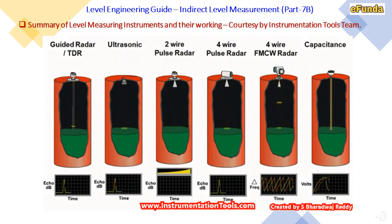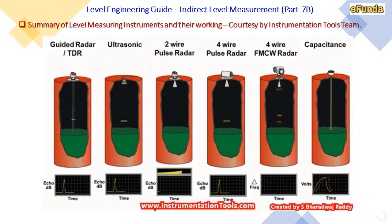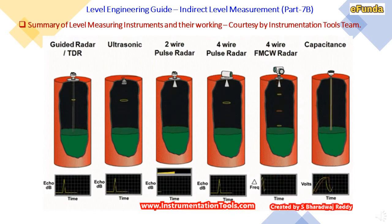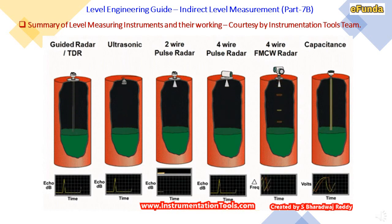The device types shown in the summary animations include: guided wave radar type, ultrasonic type, two-wire pulse radar, four-wire radar, four-wire FMCW radar, and capacitance type. These figures and animations are provided for better understanding of each level measuring device.